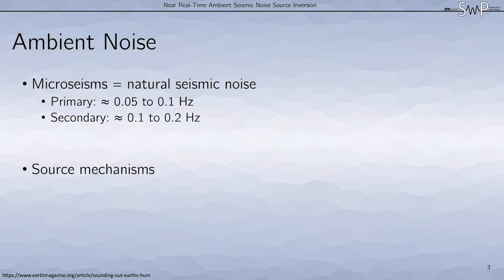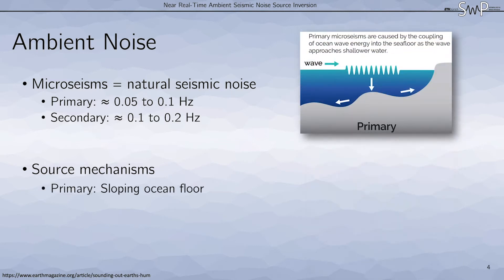One big difference between the two is the source mechanism, as in, how are these sources generated? The primary microseisms are caused by the coupling of ocean wave energy into the seafloor as the wave approaches shallower water. That means the sources of this are usually along the coastlines.